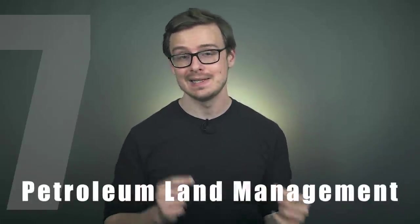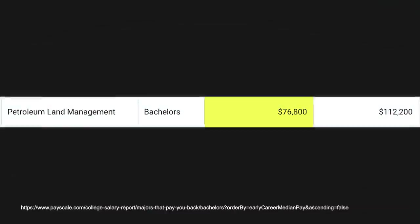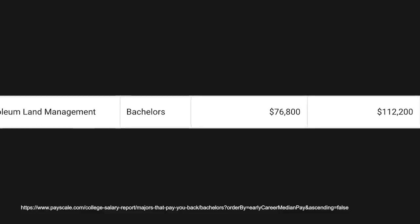Number seven on the list is another one that is in the natural gas industry, and that's petroleum land management. Unlike a lot of the engineering related degrees, this one has more to do with the business side of the natural gas industry. You're going to be focused on different laws when it comes to the natural gas industry, rights, calculating different types of interest, going over the different rules and regulations for how to transfer titles, and just how to run a natural gas business in general. With this one, you're going to start off making $76,000 a year, and mid-career pay is going to be $112,000.